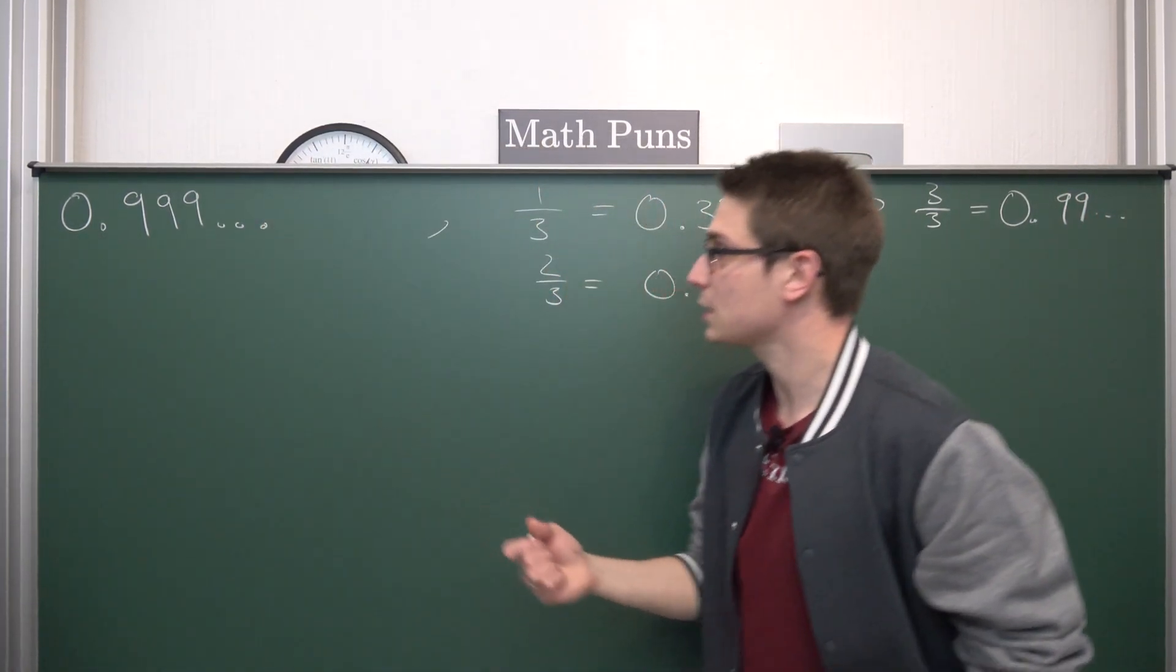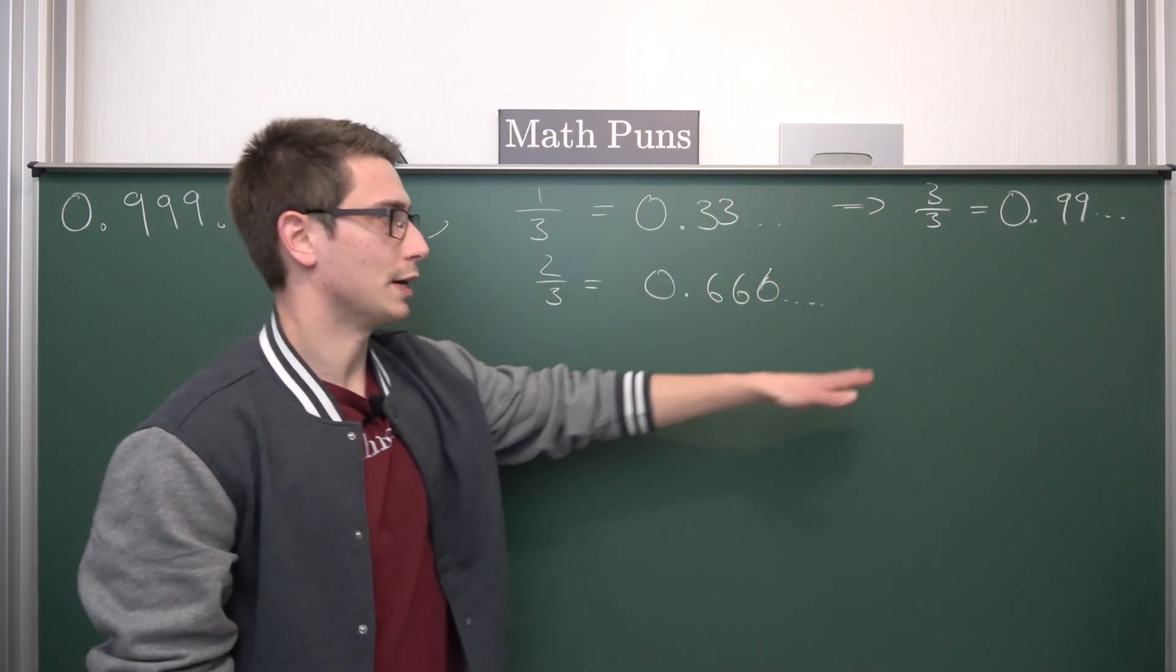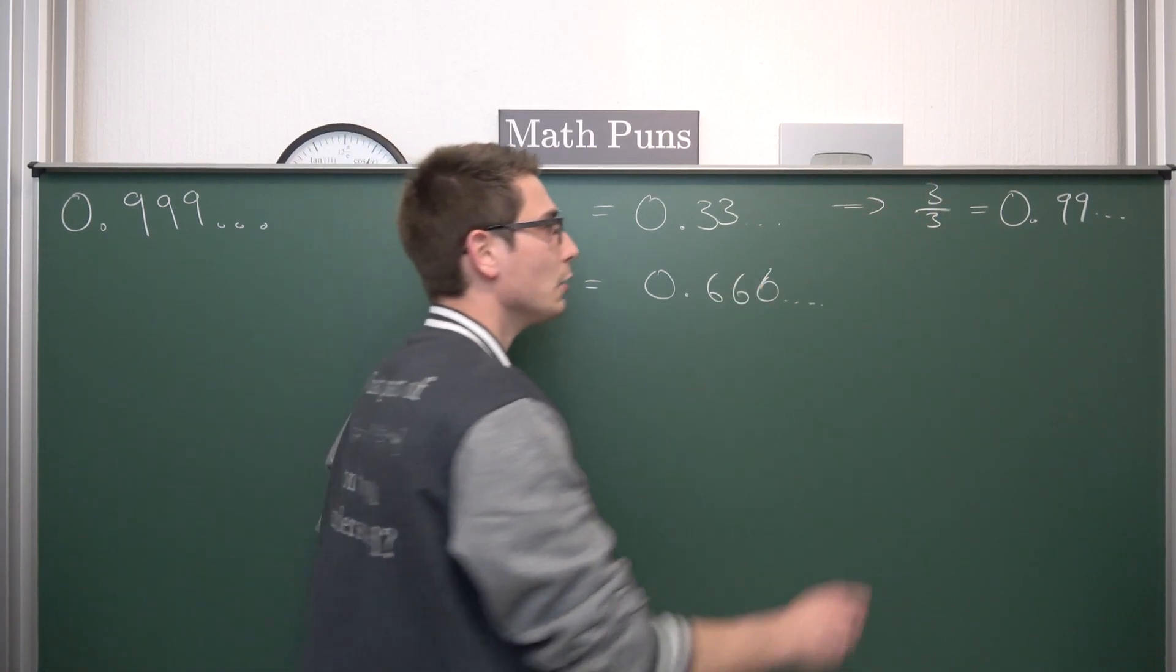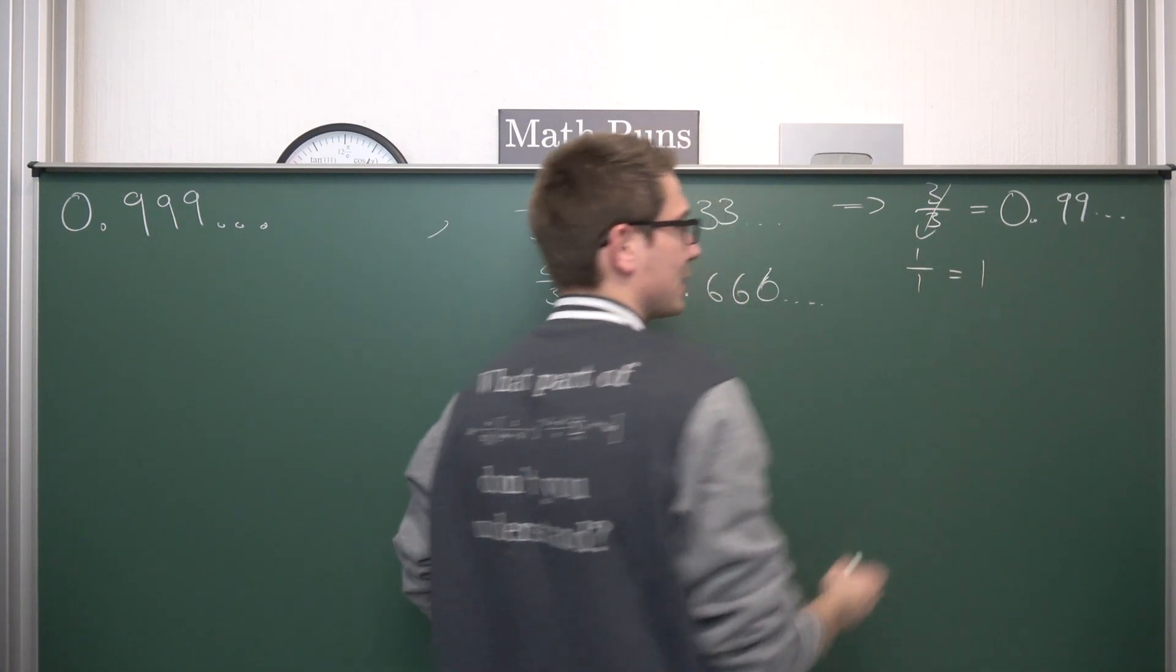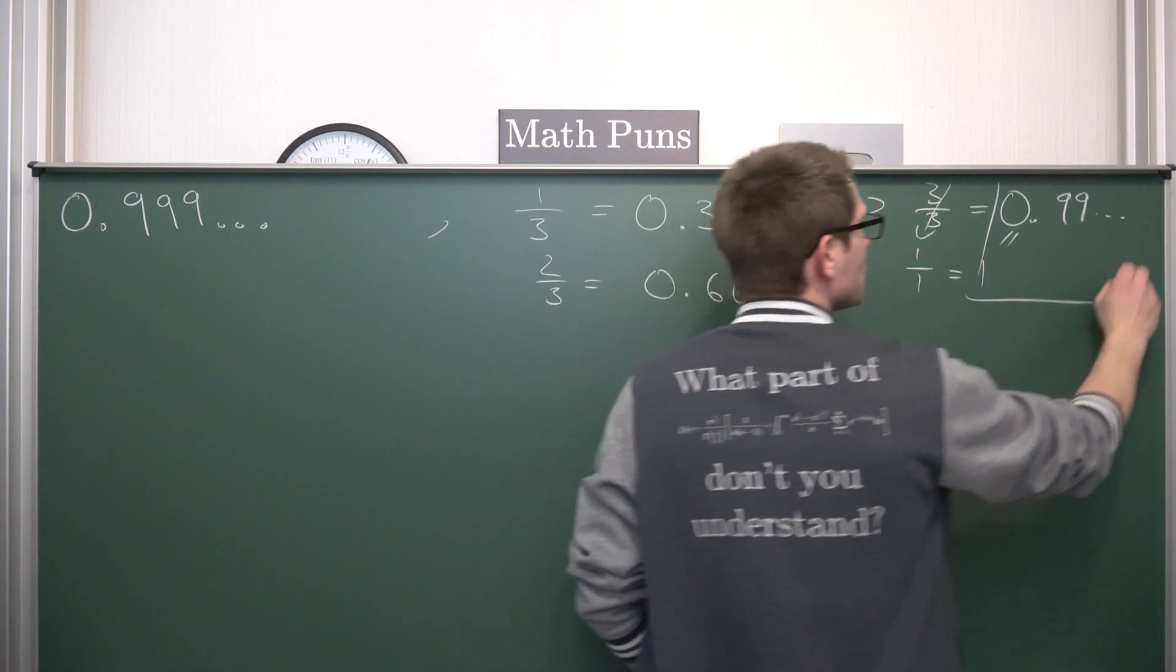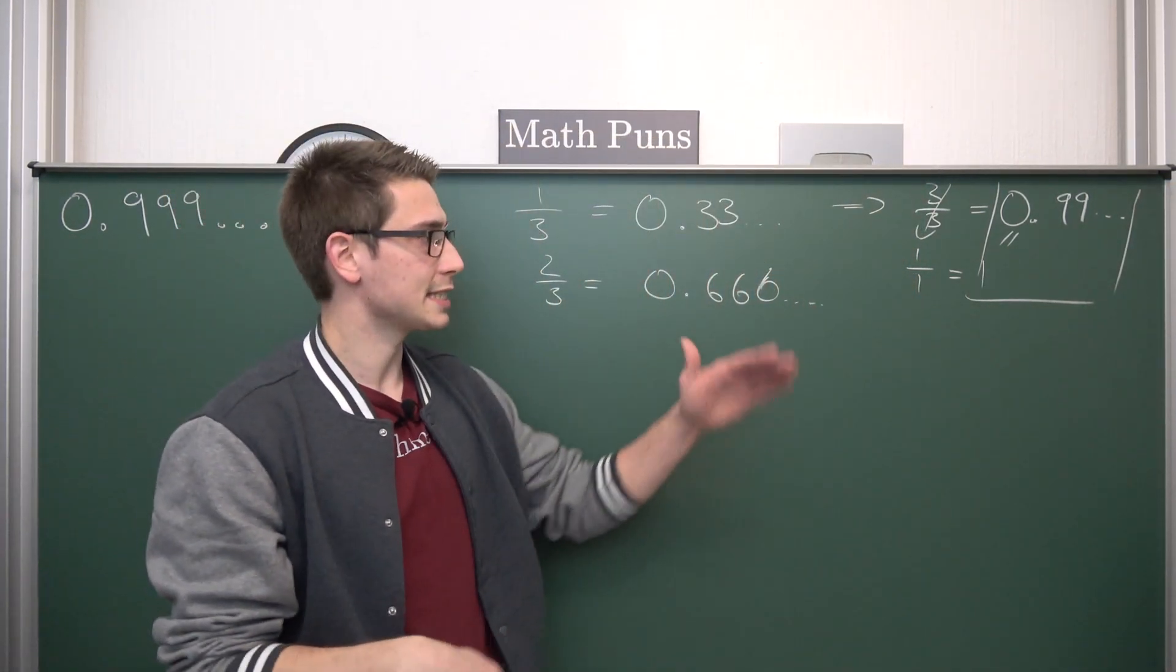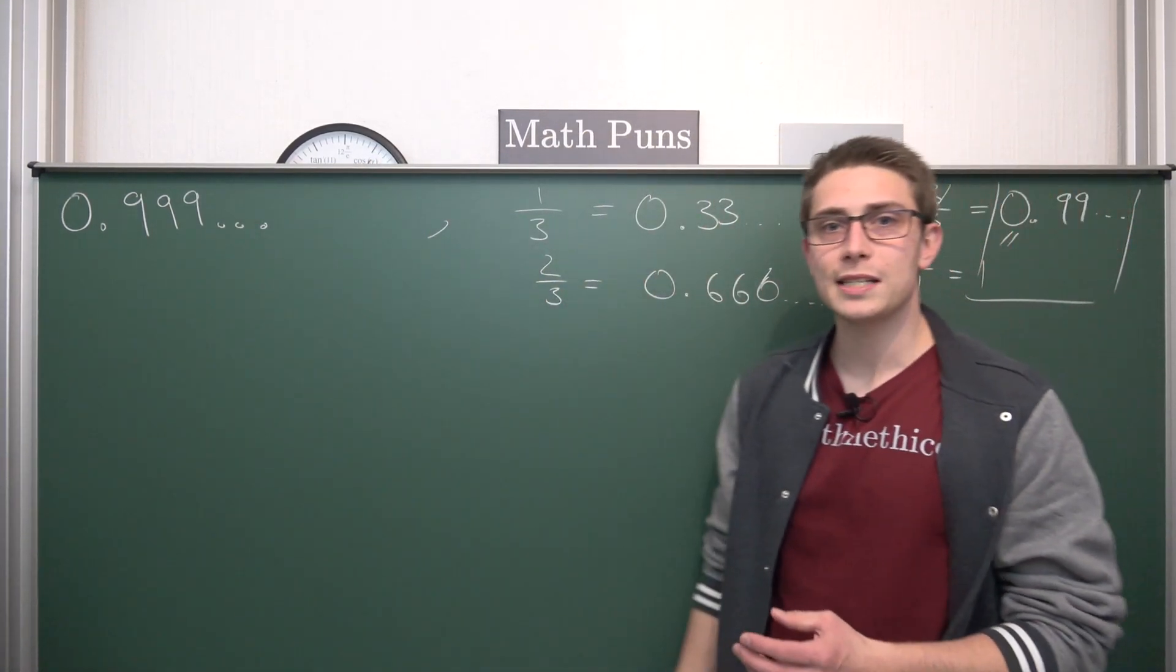But by definition of fractions, three over three is going to cancel out into just being 1 divided by 1, which is by definition nothing other than 1. Meaning this right here is going to give us the equality 0.9999... is equal to 1, and hence we are done. This is a nice algebraic way to show that those two numbers are actually the same.